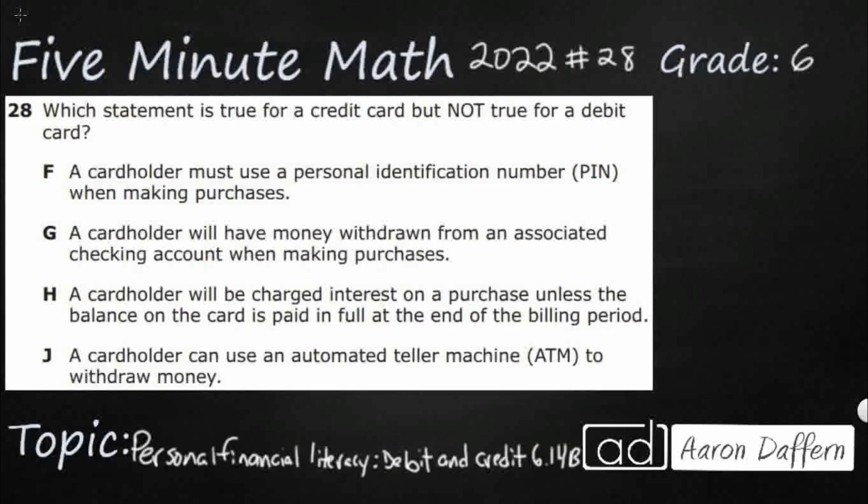Hello, and welcome to 5-Minute Math. Today we are looking at the 6th grade concept of personal financial literacy: debit and credit. This is standard 6.14B in the great state of Texas, and we are using item number 28 of the 2022 released STAAR test.